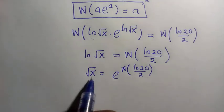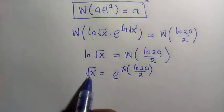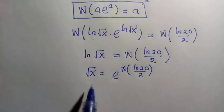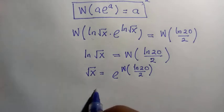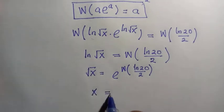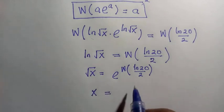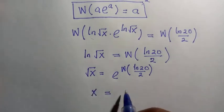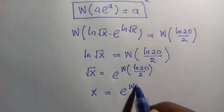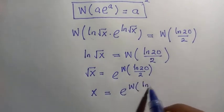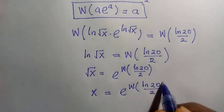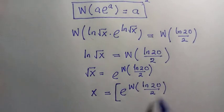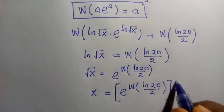And then, we also need only x. We have to take the square of both sides. So by taking the square of both sides, this is canceled, and we have only x equals the whole of this taken square. So therefore we have exponential omega of ln 20 divided by 2, all raised to power of 2.